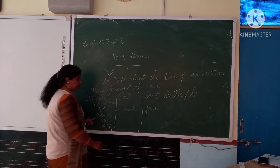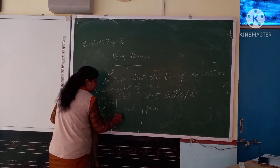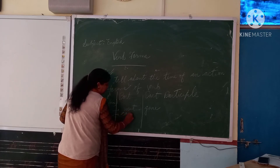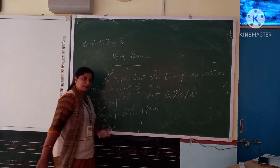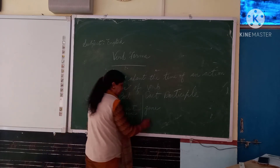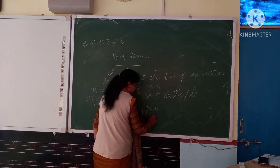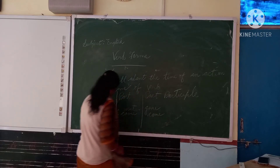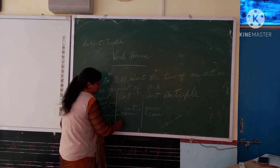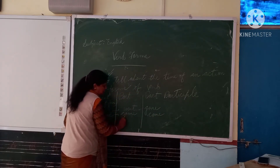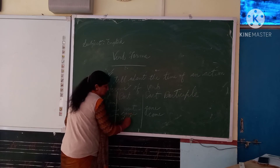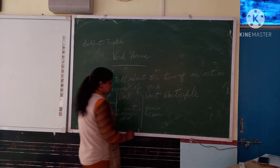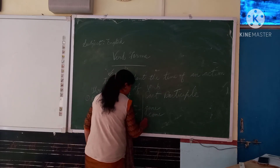Next, 'come' — the second form is 'came,' and the third form is again 'come.' Then 'do' — the second form is 'did,' and the third one is 'done.'